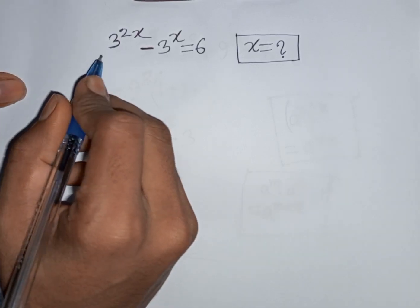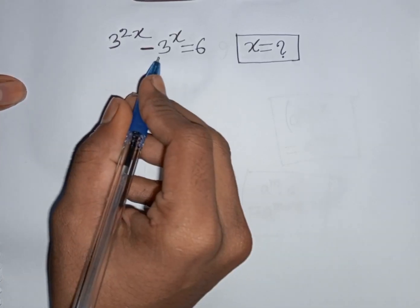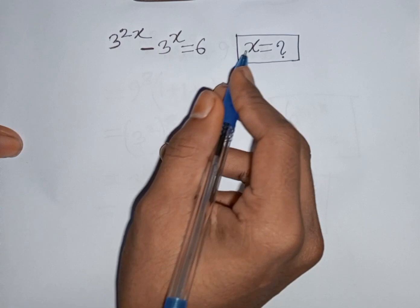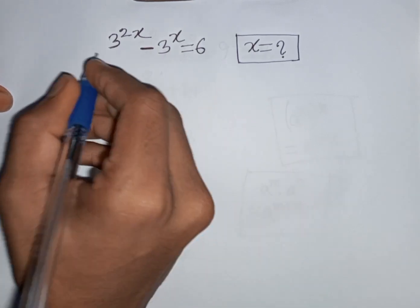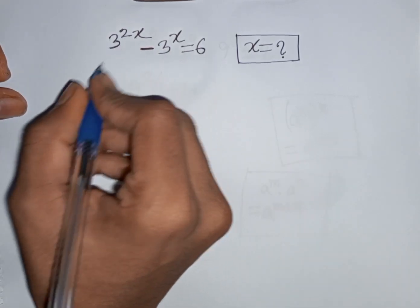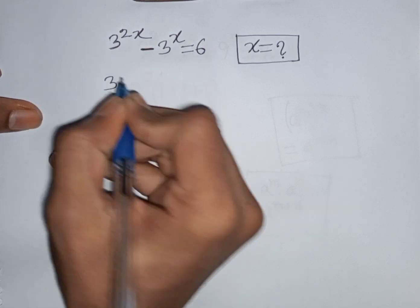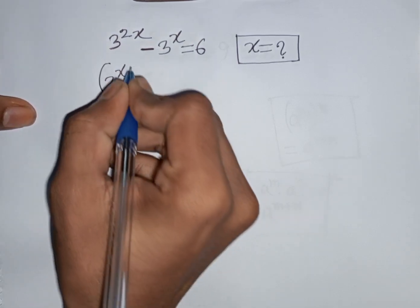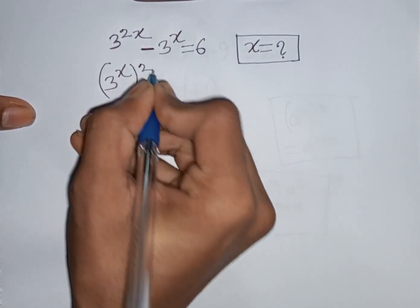How to solve 3 power of 2x minus 3 power x is equal to 6. Find the value of x. We have 3 power of 2x, which can be written as 3 power x, then bracket power 2.